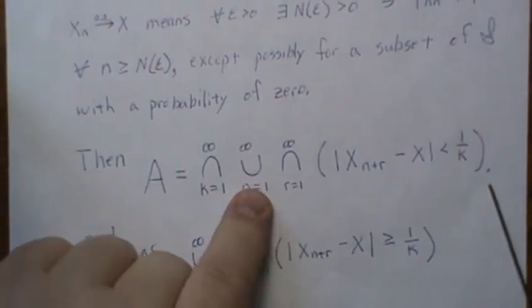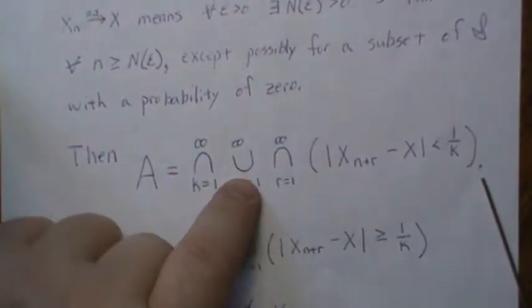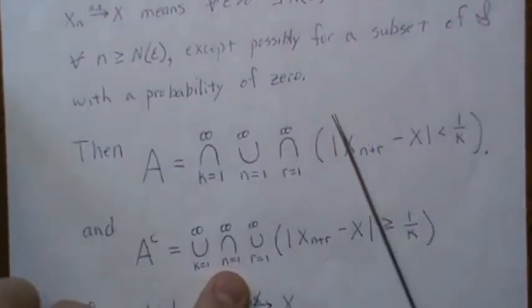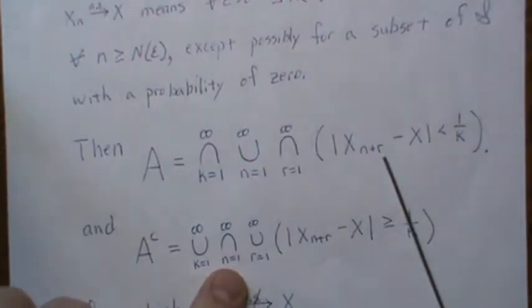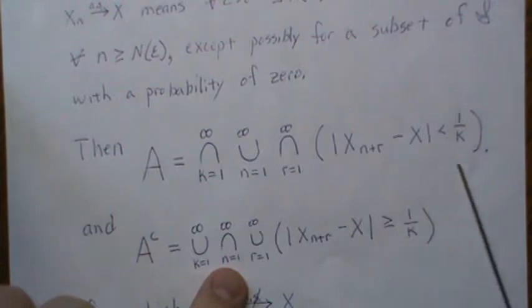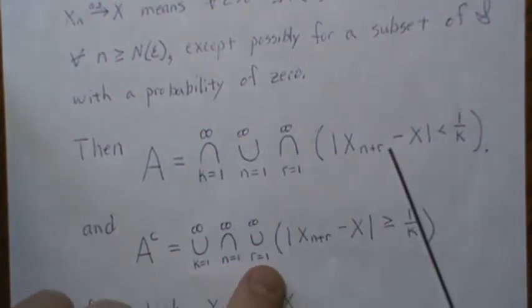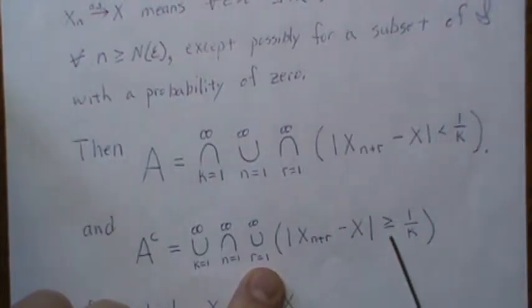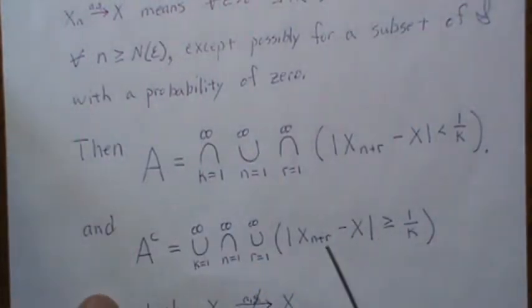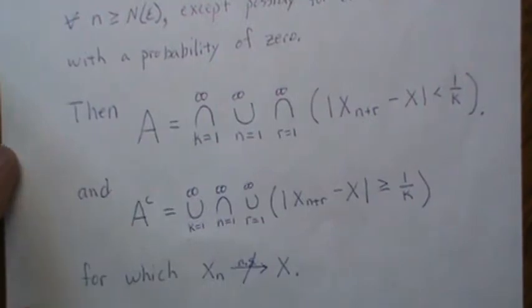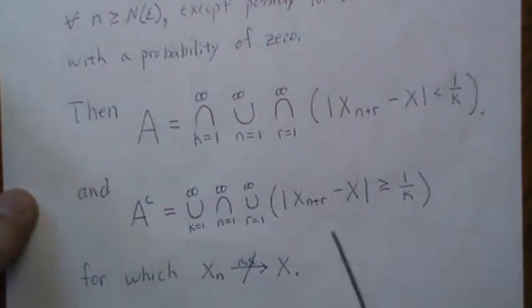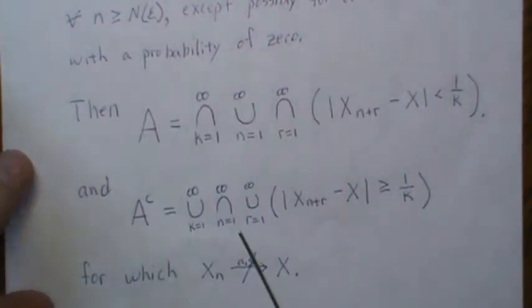Then the complement of this - DeMorgan's Law says change that to the intersection, and that's the complement of that. Then the complement of this, according to DeMorgan's Law, is change that to union and take the complement of this. The complement of this is not less than 1 over k - it's greater than or equal to 1 over k. So this is the complement of A, and remember A complement is where it does not converge almost surely, but we know that this has a probability of zero.